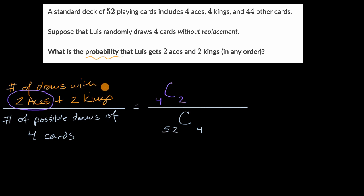And then separately, we can use similar logic to say there's also 4 choose 2 ways of picking two kings out of four possible kings.